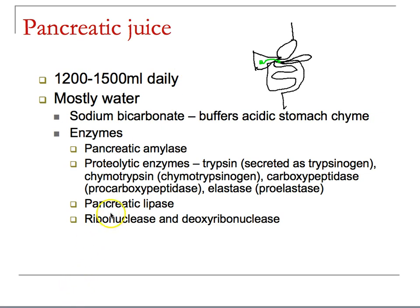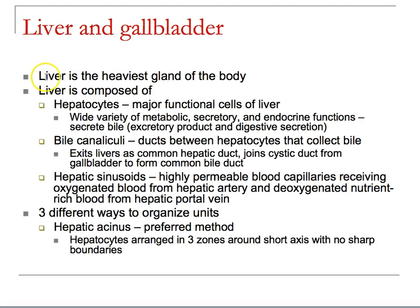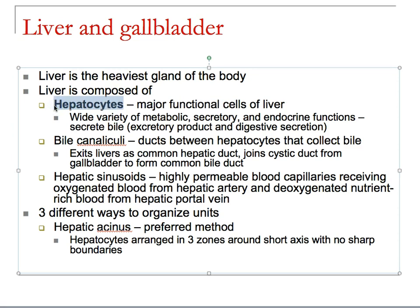The organ doing this work is the liver — the heaviest gland of the body. The major cell types are the hepatocytes, so anytime you see the word hepatocyte you're thinking liver. They have metabolic, secretory, and endocrine functions. They create bile, which has digestive responsibilities, and to do this they create structures called bile canaliculi which collect the bile as it's being made.